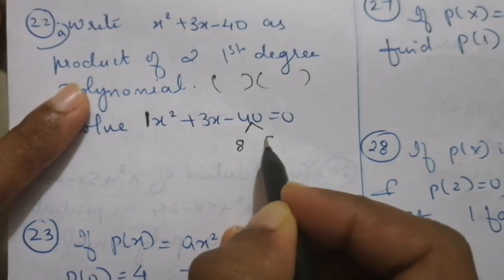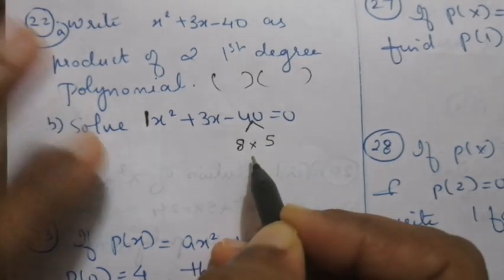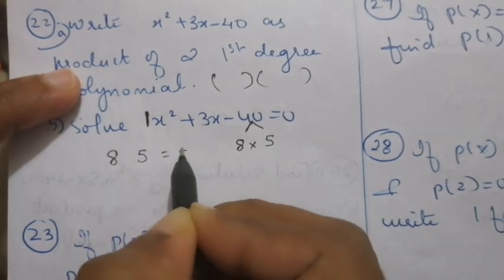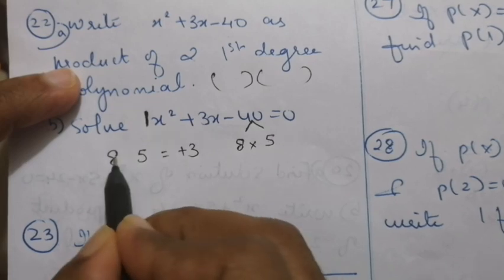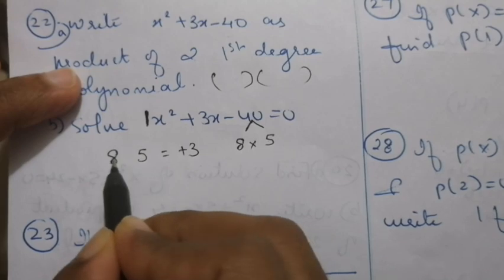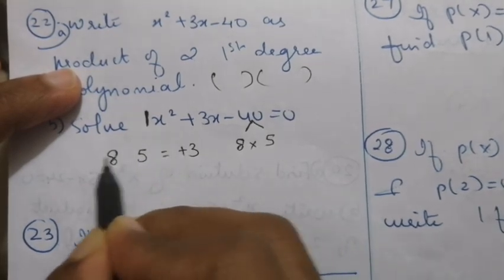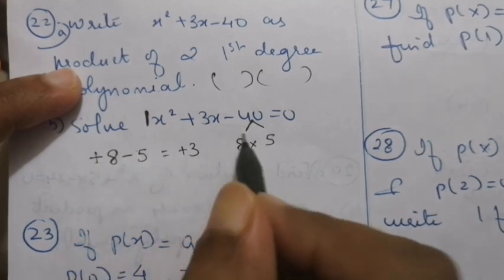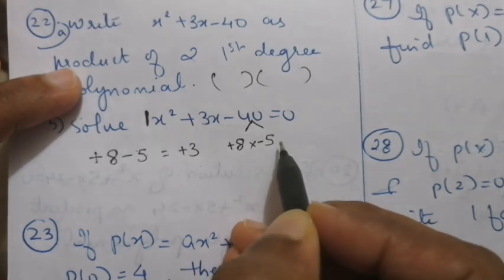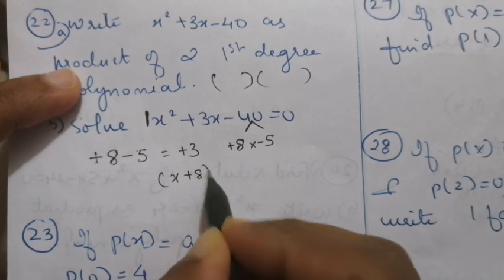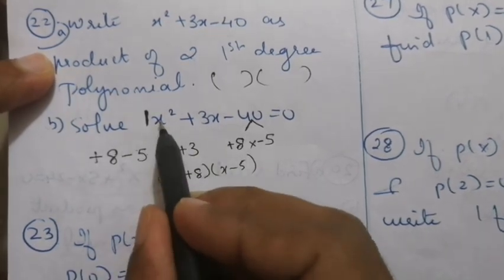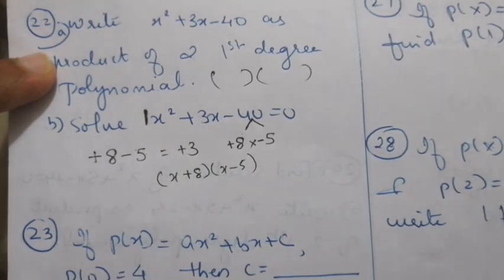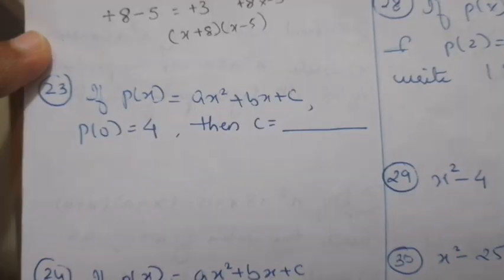40 means I can write 8 into 5 equals 40. But with 8 and 5 I also need to get 3. If I find the difference between them I get 3. For a difference I need different signs. Since the result is plus 3, the greater number gets plus and the smaller gets minus: plus 8 into minus 5. So directly write x plus 8 and x minus 5. You can verify by multiplying and checking you get the coefficient of x, or simply use the quadratic formula.